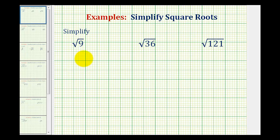We want to simplify the given square roots. A square root is not considered simplified if the radicand — the number underneath the square root — contains perfect square factors.